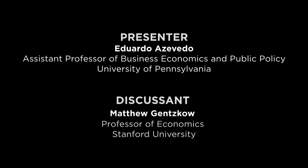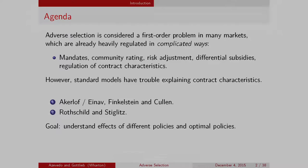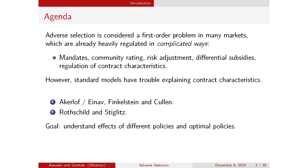When you look at all these policies, what's interesting is that a lot of them, the whole point of the policies is to change product characteristics—to guarantee not only that people can purchase products, but also that the quality of the products is good. But then when you look at the standard adverse selection models that we have to think about this, they have a lot of trouble in explaining what kinds of contract characteristics are traded.